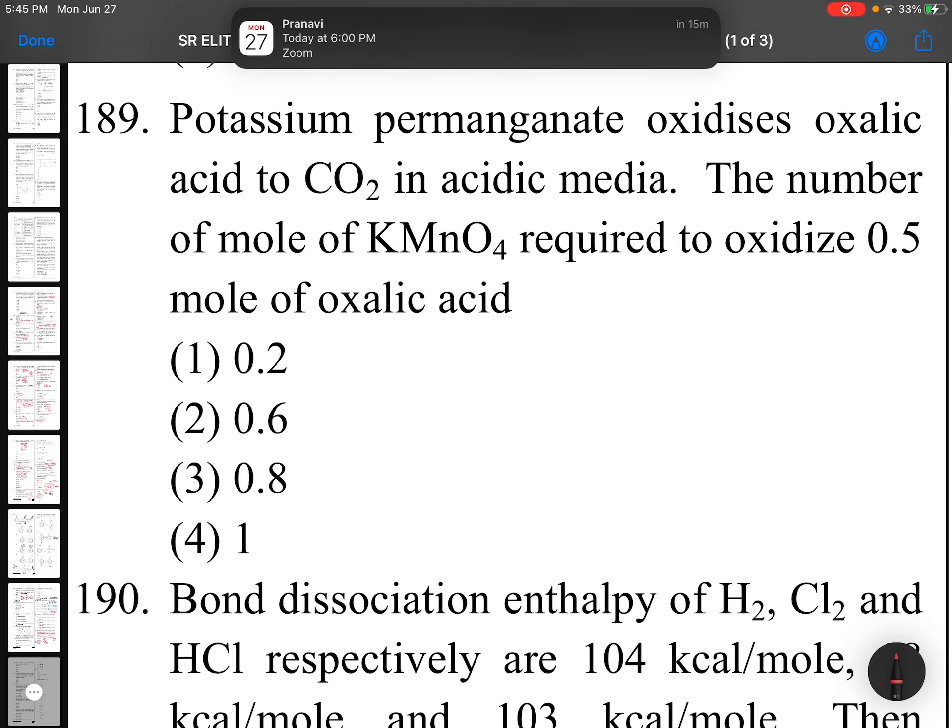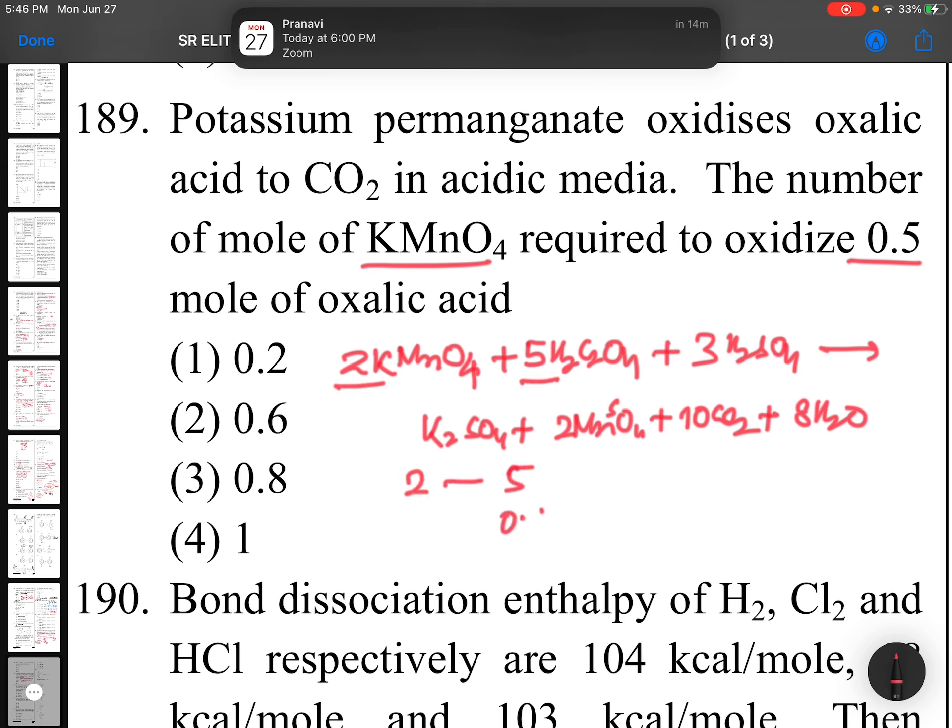Question 189: Potassium permanganate oxidizes oxalic acid to CO2 in acidic medium. The number of moles of KMnO4 required to oxidize 0.5 moles of oxalic acid. The reaction: 2 KMnO4 plus 5 H2C2O4 plus sulfuric acid. 2 moles for 5 moles, for 0.5 moles it should be 0.2 moles. The answer is first option.